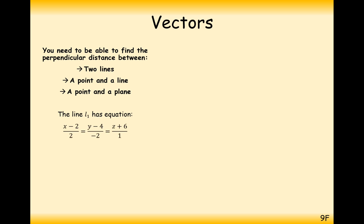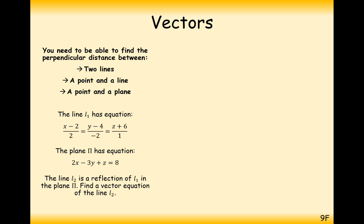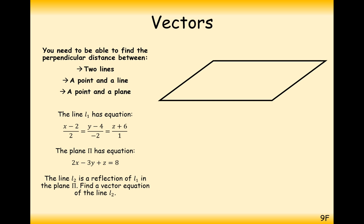So we've got an equation of a line that's written in Cartesian form — I'll try and convert it into vector form as soon as I can. And we have the equation of a plane, also in Cartesian form — I'd much rather that be in scalar product form, but I'll write that out later. We want to find the line L2 that is a reflection of line 1 in the plane pi. So let's go and find that equation of that line.